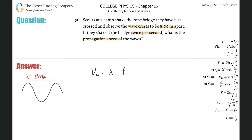The other piece of information they told us was they shake the bridge twice per second. What physics variable is this? It's actually a frequency. Remember, frequency is cycles, or oscillations, or up and downs per second. They say they shake it twice per second, meaning they go up and down twice every second. That, by definition, is a frequency.